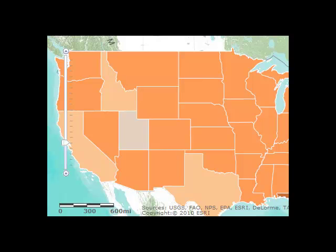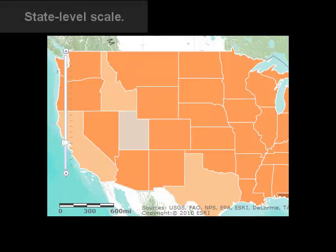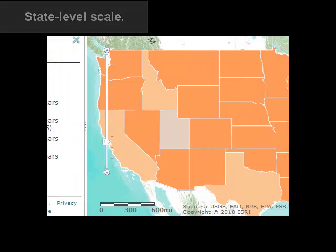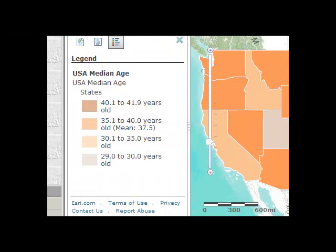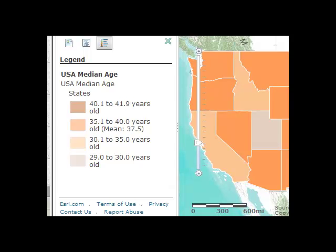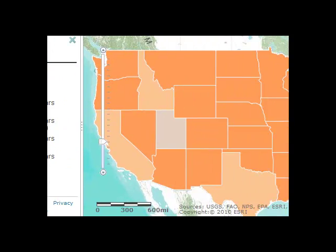Here's an example of how scale matters. Let's take a look at median age of the population — I'm going to use ArcGIS Online to do that. At a certain scale, there's one state that stands out as having a lower median age than other states. Let's take a look at the legend: less than 30 over there in Utah.